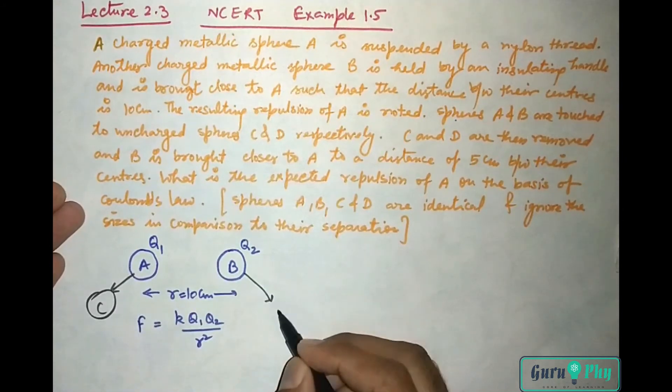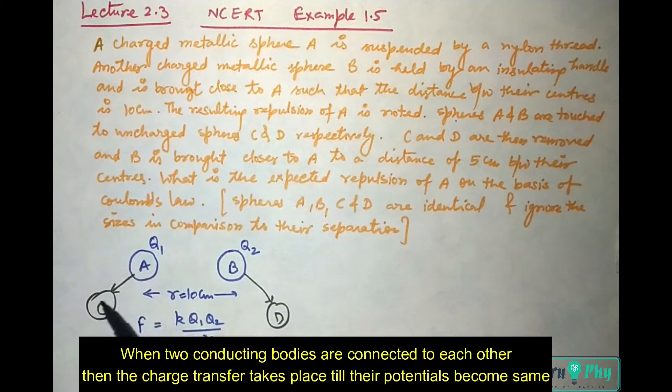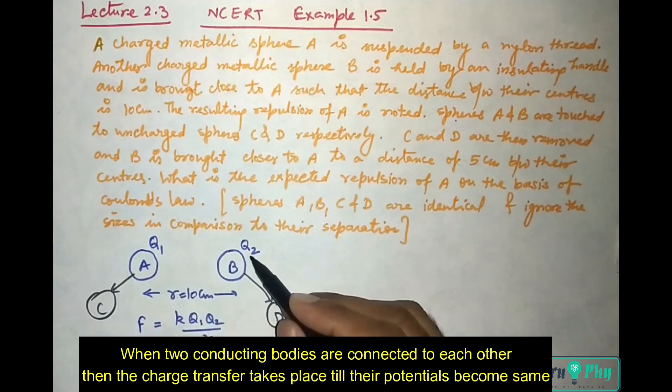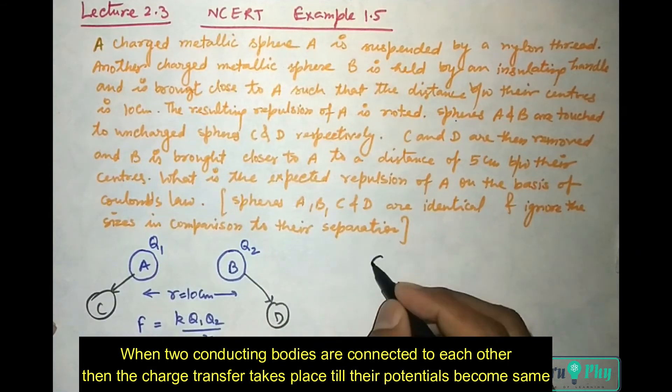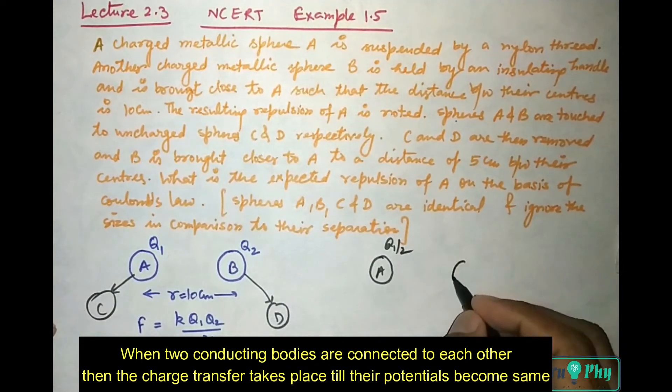Since A and C are identical, half of A's charge will go to C. Similarly, half of B's charge will go to D. So A will have charge Q1 by 2 and B will have charge Q2 by 2 remaining.